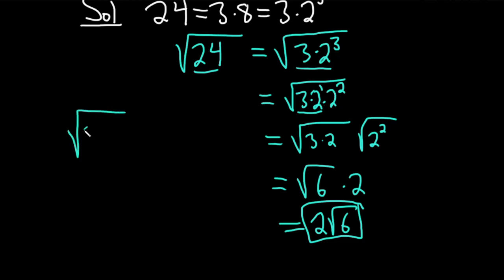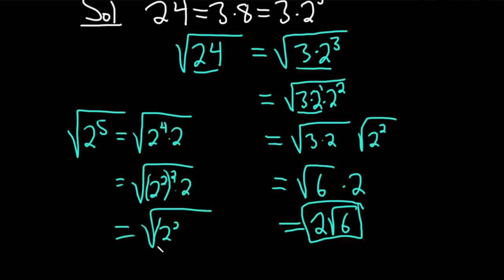For example, if you had 2 to the 5th, you'd write that as 2 to the 4th times 2. Then you'd write that as 2 squared squared times 2. And then you take the square root, 2 squared squared, square root of 2. And then when you take the square root of this, you would just get 2 squared square root of 2, which is 4 square root of 2.